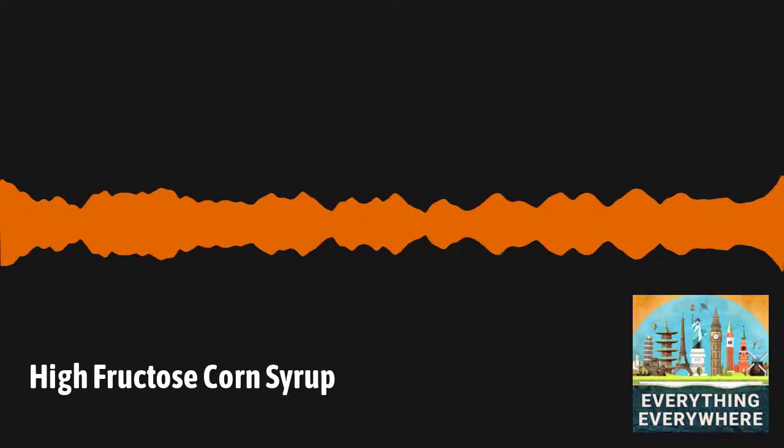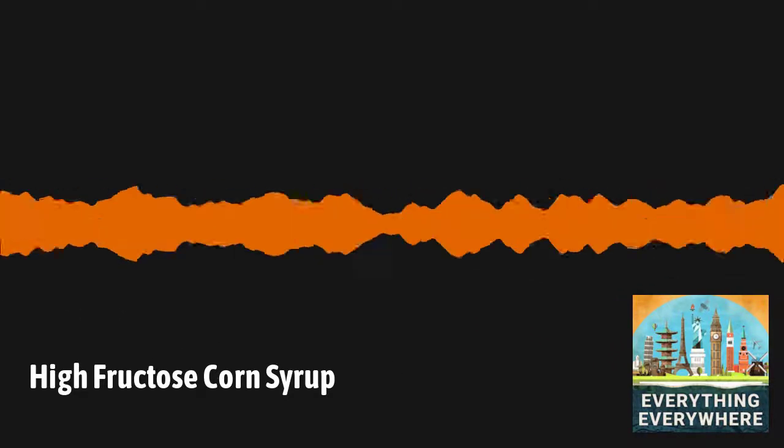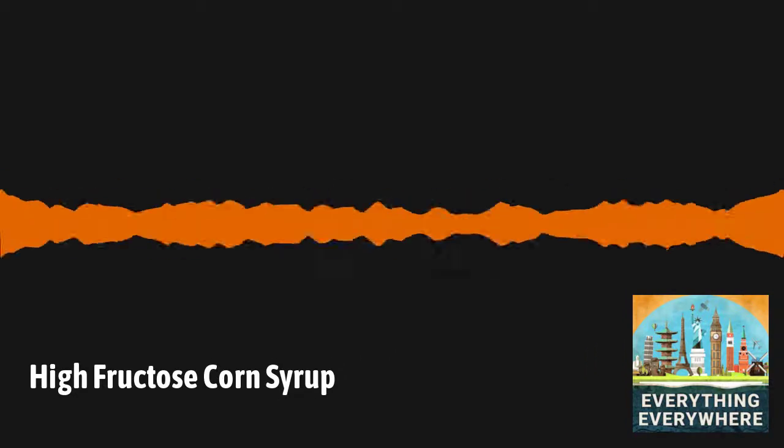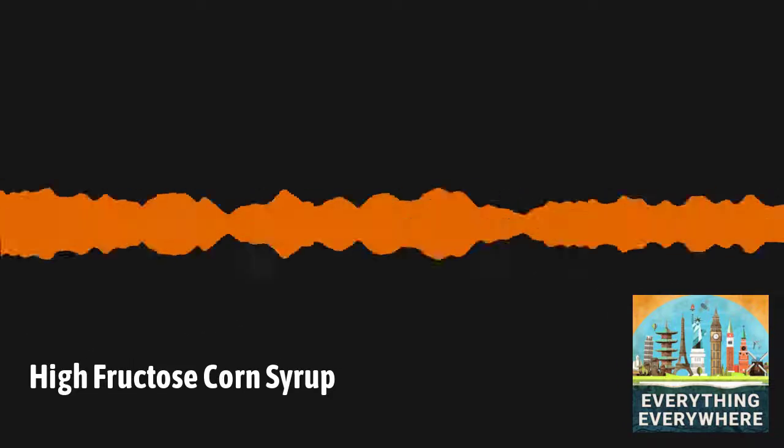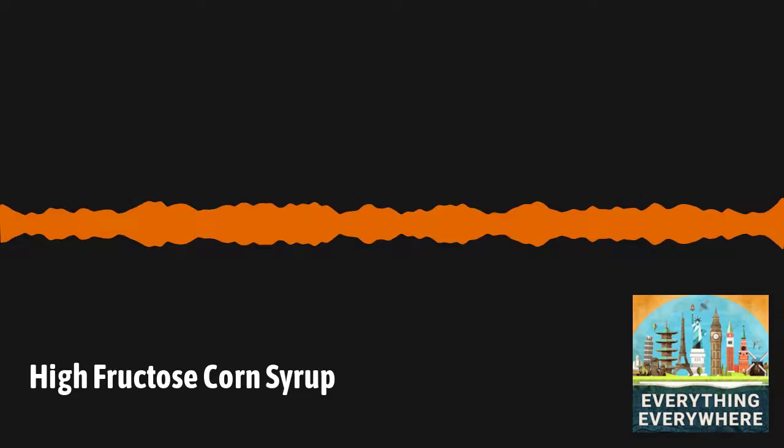The stuff we call table sugar is sucrose, which is a disaccharide, made up of one glucose molecule and one fructose molecule. These building blocks can be made into even more complicated molecules called polysaccharides, which include things like starch and cellulose.